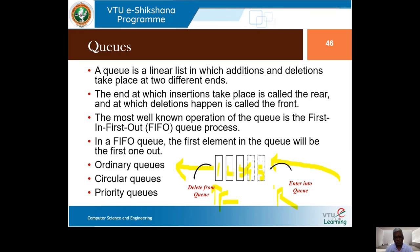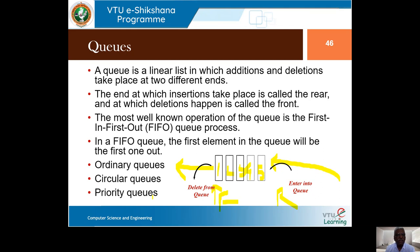The queue operates on FIFO — first in first out — not last in first out, which would violate queue discipline. There are three major types of queues we will discuss: ordinary queues, circular queues, and priority queues. Each has its own advantages and applications.